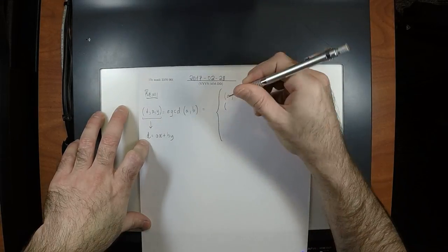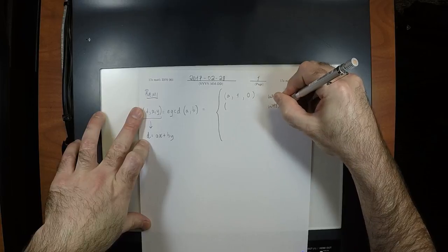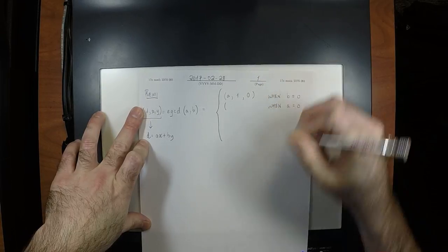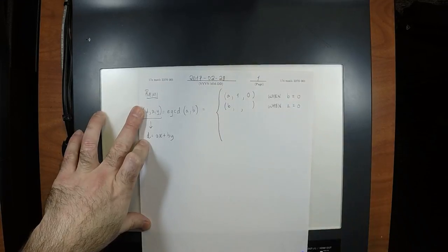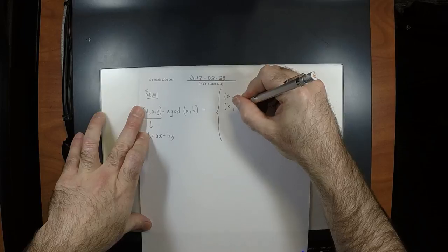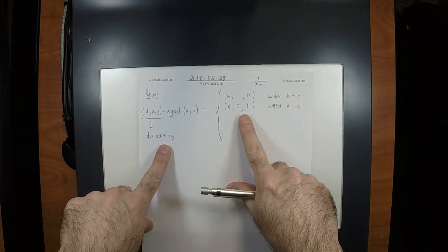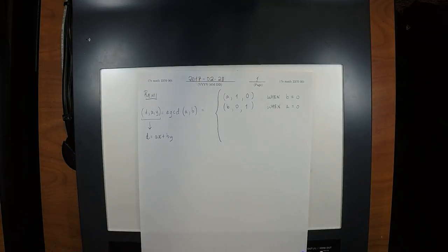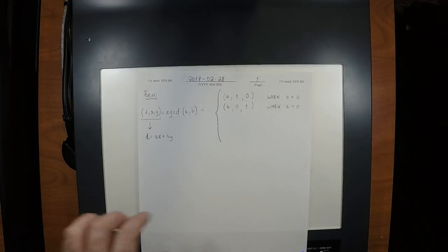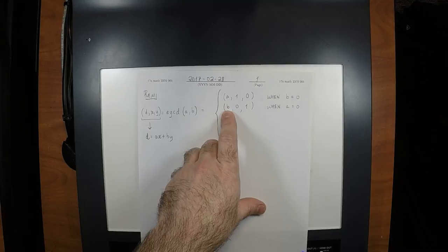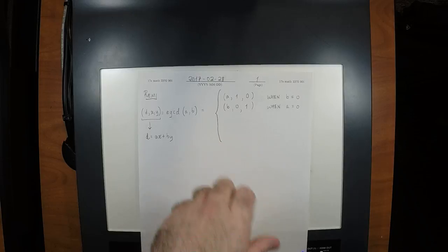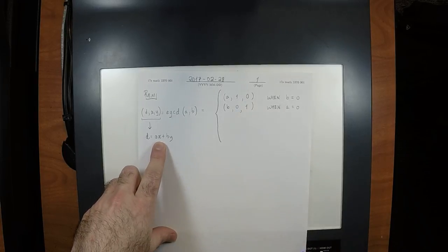What's the other base case? When A is zero. In that case the greatest common divisor is B, and the Bezout coefficients are zero and one — again satisfying that equation. In computation, you're computing downward. When you get to a base case, you definitely have the GCD correct, and you can verify that one-zero and zero-one are exactly correct according to that equation.